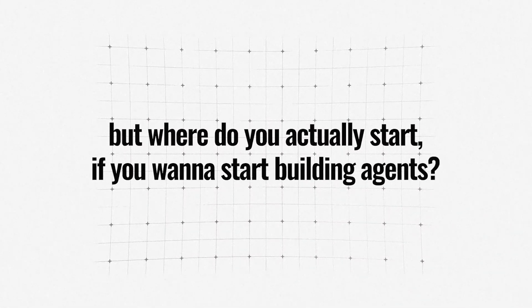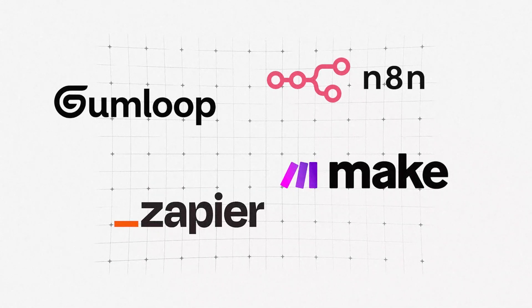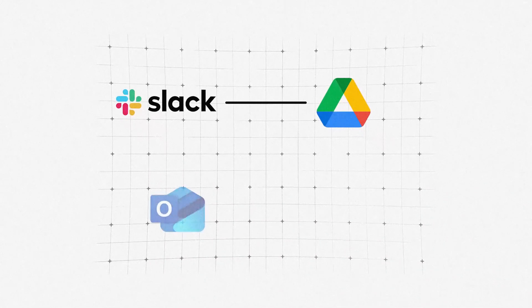Those are the key tips I've learned from 18 months of building, and if you start with those you'll be 95% of the way there. So where do you actually start if you want to build out agents? I'd highly recommend any of these four workflow automation platforms. Even as a non-technical person, you can start learning any of these — they're all drag-and-drop visual builders that connect all of your different tools, like Slack to your Google Drive or Outlook to your Excel, and they all have the ability to build AI agents by just adding a small prompt and connecting it to the right tools.